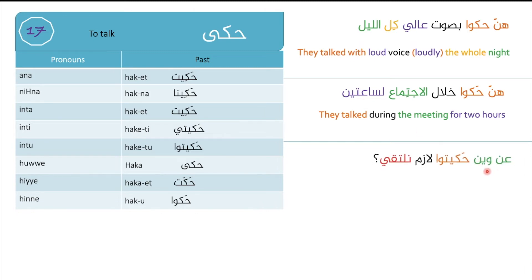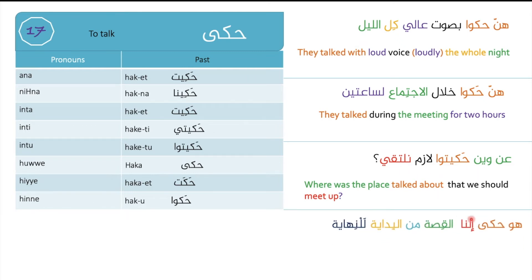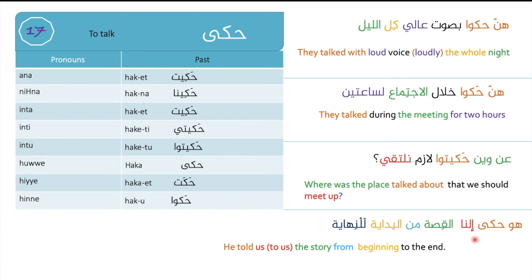Another example: anwayn haqaitu lazim nilte'i? — About what did you speak? We should meet. Hakaitu means 'you spoke/talked', lazim means 'we should/must', and nilte'i means 'we meet'. Also: huwa haqalna il-qissa min il-bidaye lal-nihaye — he told us the story from the beginning to the end. Notice they join the verb and the possessive pronoun in pronunciation: haqalna.